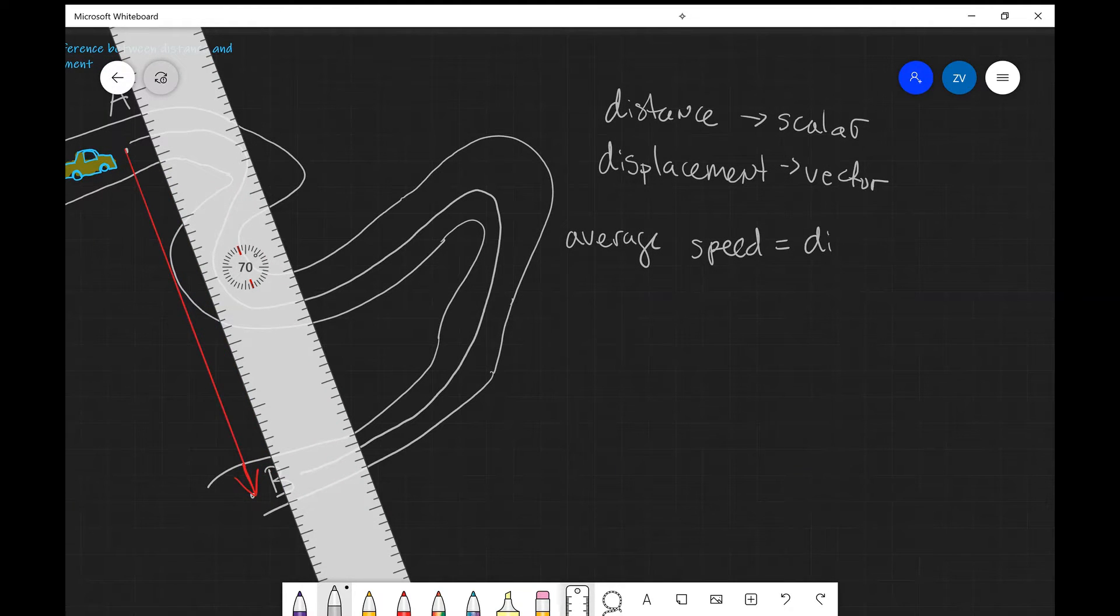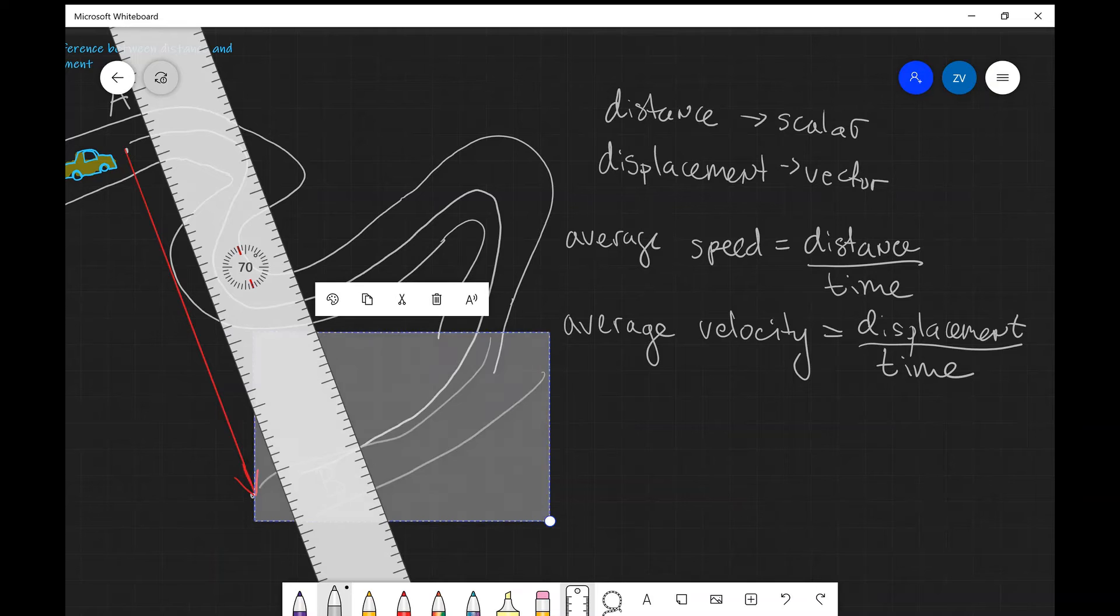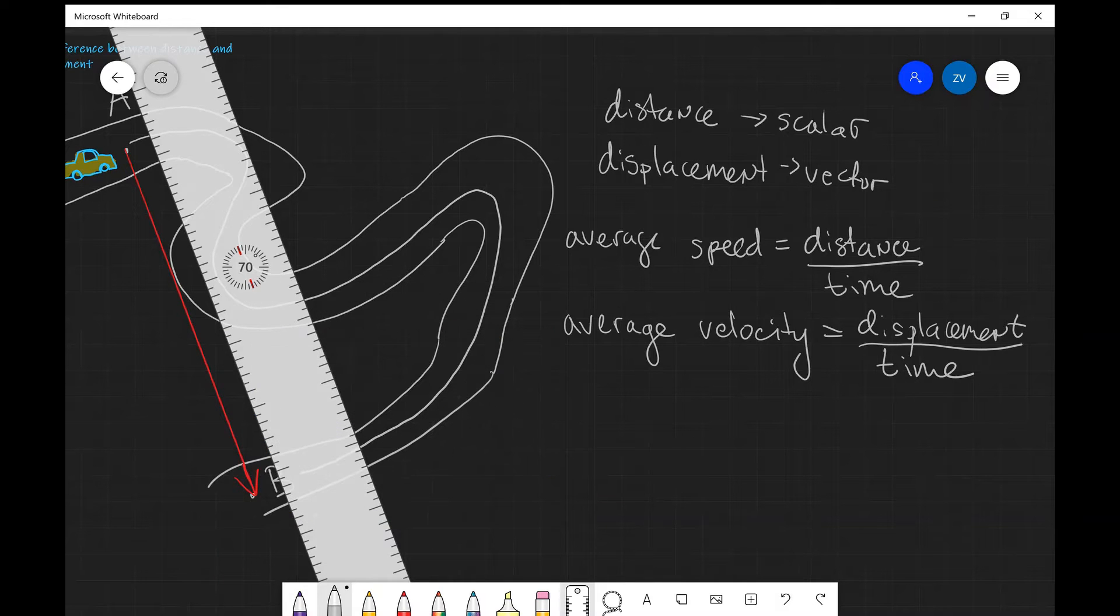We can also define average velocity which is a vector quantity. And this will be equal to our displacement divided by the time that it's taken for the car to travel from one place to the other.